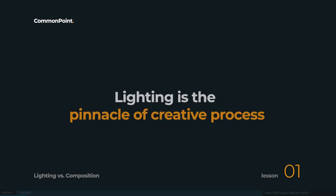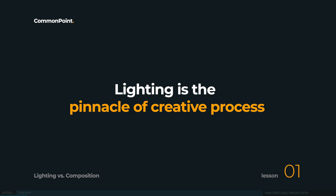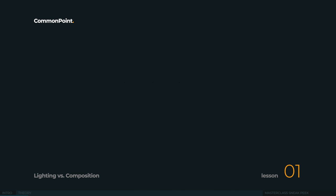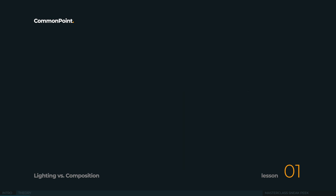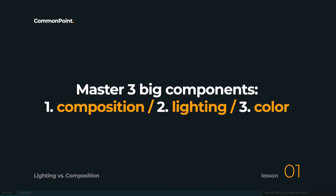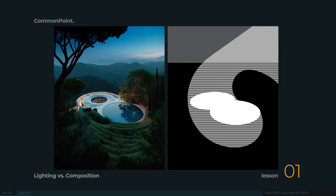Lighting is the very end of our creative process. It's somewhat of a cherry on top of the cake. Before you approach it, you should understand how you got to this stage — understand the DNA of your image, what's the composition and all of that stuff. Before you approach the lighting, you should understand the goal of it. The key is to understand three big components: composition, lighting itself, and color.